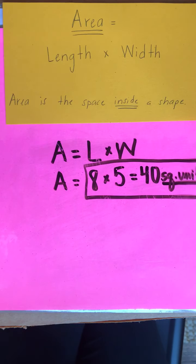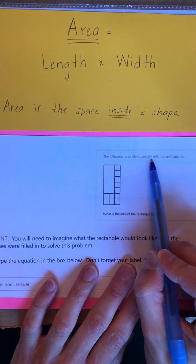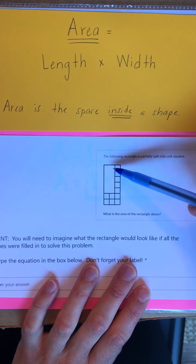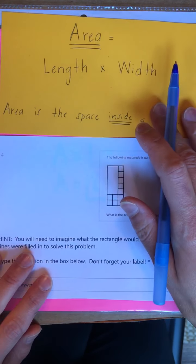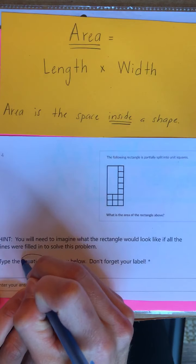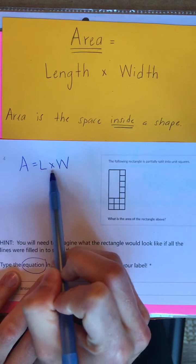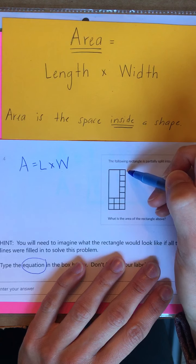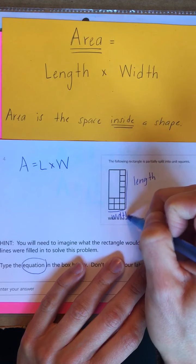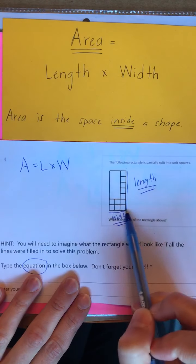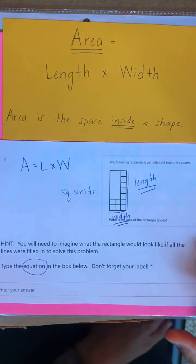Let's take a look at number 4 together. This says the following rectangle is partially split into unit squares — meaning they filled up some of the whole rectangle with unit squares and left some of it empty. What is the area of the rectangle? You're going to write an equation using our formula: length times width. Find the length, find the width, multiply them together, don't forget your label — square units. When you're done, press play and we'll take a look at number 5 together.